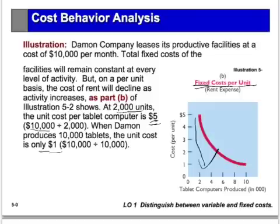It's important to understand the difference between fixed and variable costs, but you must also keep in mind the difference between total fixed cost and fixed cost per unit. If we were to graph it, the total fixed costs remain the same but on a unit basis the cost goes down.